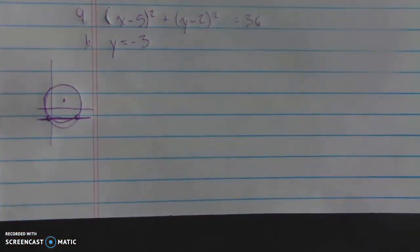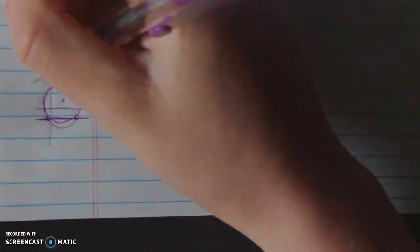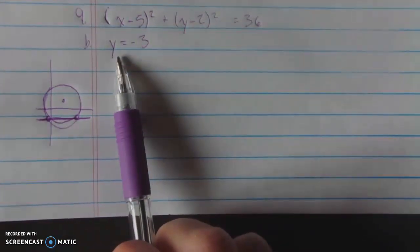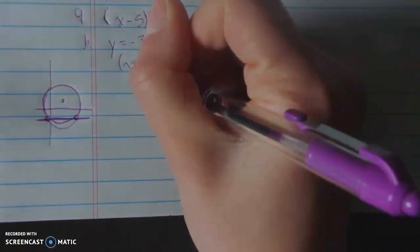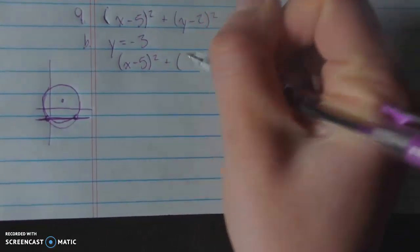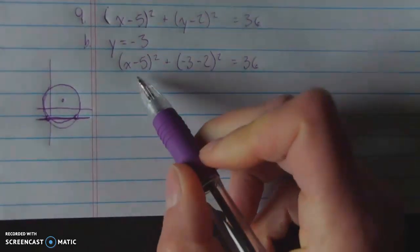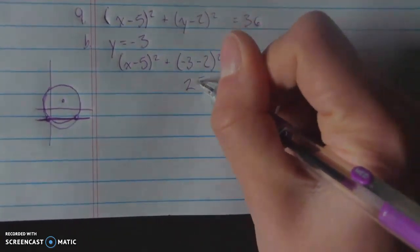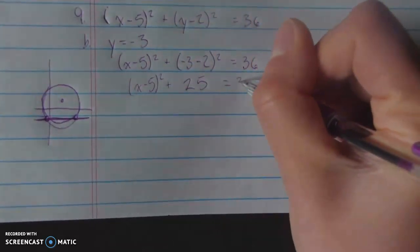You could potentially have it go through no points if it's too low or too high, or you could have it go through exactly 1 if it hits at just the edge. But it does look like it's going to go through. So here, I'm going to do the same process that I did last time, only instead of replacing the x, I'm replacing the y. So that means that here I have x minus 5 squared plus my y value of negative 3 minus 2 squared is equal to 36. And this is going to give me, negative 3 minus 2 is negative 5, and negative 5 squared is 25. So I've got x minus 5 squared plus 25 equals 36.